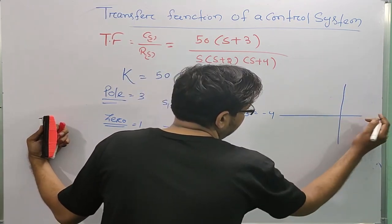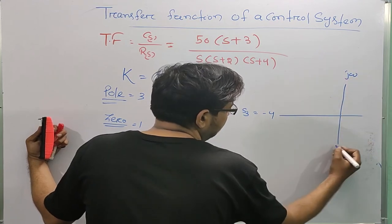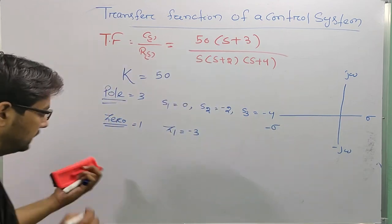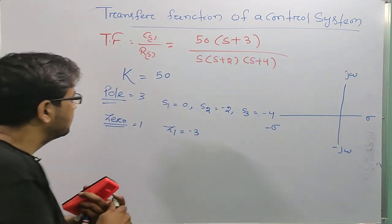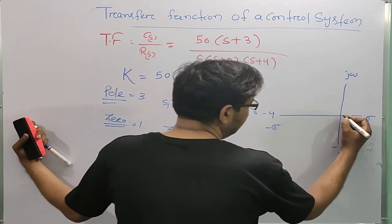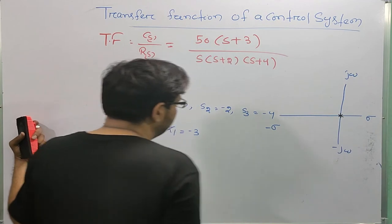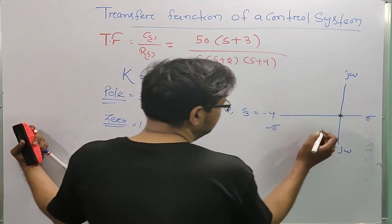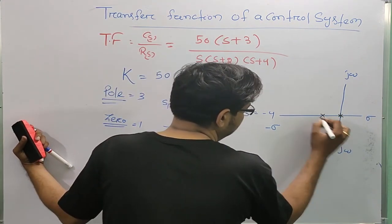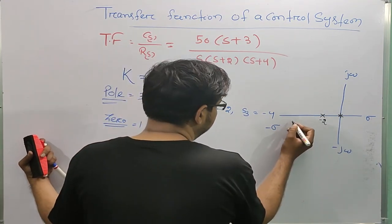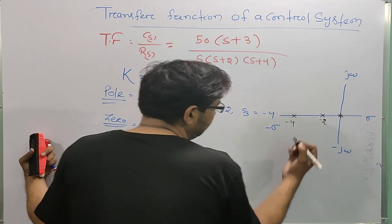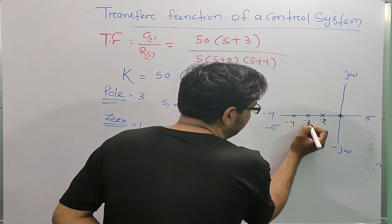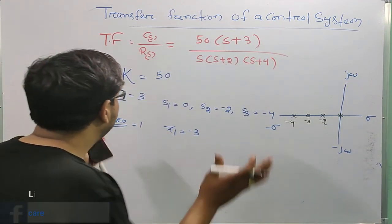If I plot in the s-plane with axes jω, -jω, σ, and -σ: there is a pole at s = 0, a pole at s = -2, a pole at s = -4, and a zero at s = -3.